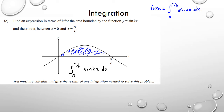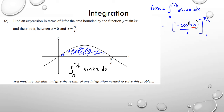Integrating sin gives negative cos, so we get negative cos(kx). Remember to divide by the derivative of the inside function, which is k. So we have negative cos(kx) over k, evaluated between π/k and 0.